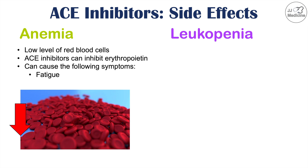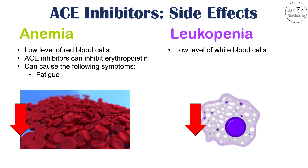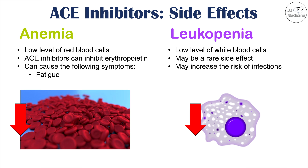Another uncommon side effect is leukopenia — a low level of white blood cells. There are case reports of this occurring, and low levels of white blood cells, particularly neutrophils, may lead to an increased risk of infections. Many of the side effects discussed here are rare or uncommon, while some of the ones mentioned earlier are more common.